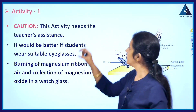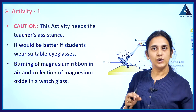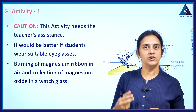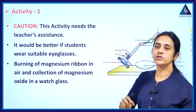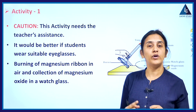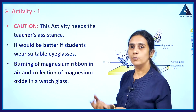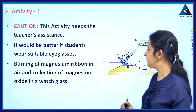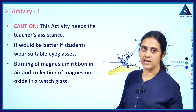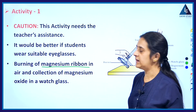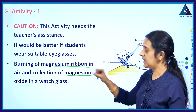Activity 1 — caution: this activity needs the teacher's assistance. Students should wear suitable eyeglasses and perform every activity under the guidance of the teacher. The activity is burning of magnesium ribbon in air and collecting the magnesium oxide product in a watch glass.